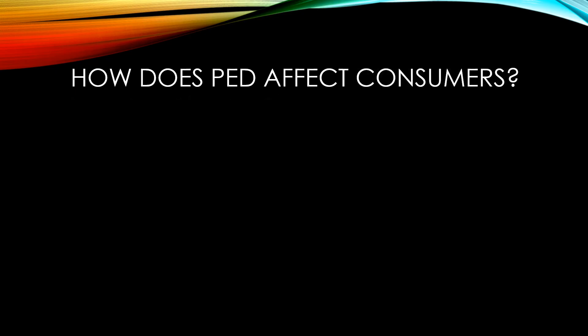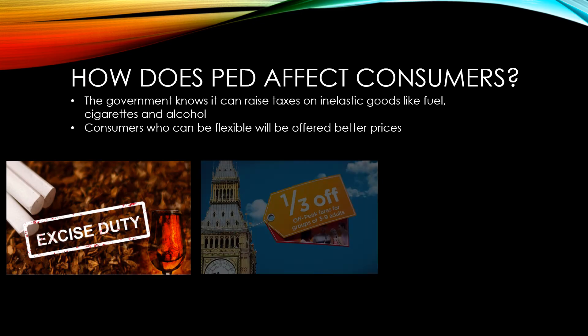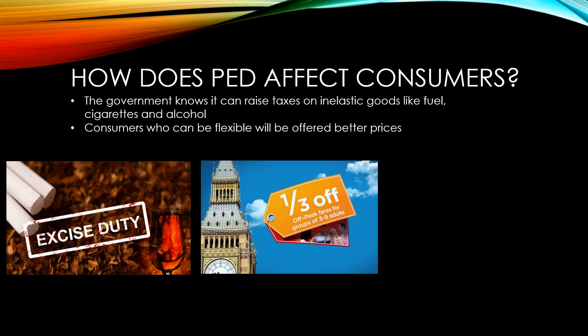Consumers don't really calculate PED for themselves, but they are still affected by it. For instance, the government knows it can raise taxes on inelastic goods like fuel, cigarettes and alcohol, and demand won't go down much, so they'll be able to raise more money for the government. Consumers who can be flexible will get offered better prices — there are many industries and services where if you use them at off-peak times, you will receive a discount.